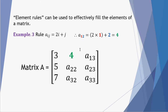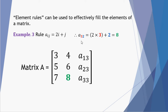Into our second column: element A 1 2 has I of 1 and J of 2. So 2 lots of 1 plus 2 is 4. Element A 2 2: 2 lots of 2 plus 2 is 6. Element A 3 2 — third row, second column: 2 lots of 3 is 6 plus 2 is 8.